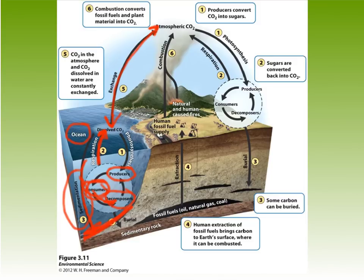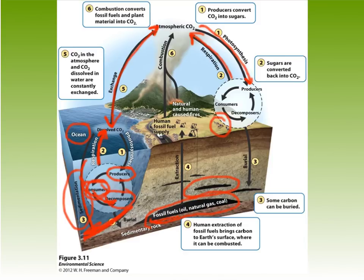On land, the same basic process occurs. CO2 from the atmosphere is absorbed by producers, consumers eat the producers and respire CO2 back into the atmosphere, and decomposers eat dead consumers. If dead organisms don't get decomposed fast enough, they get buried. Under a lot of pressure, over the course of millions of years, they become fossils and ultimately fossil fuels — oil, natural gas, and coal. These are hydrocarbons. During the Industrial Revolution, humans started extracting these hydrocarbons from the ground.